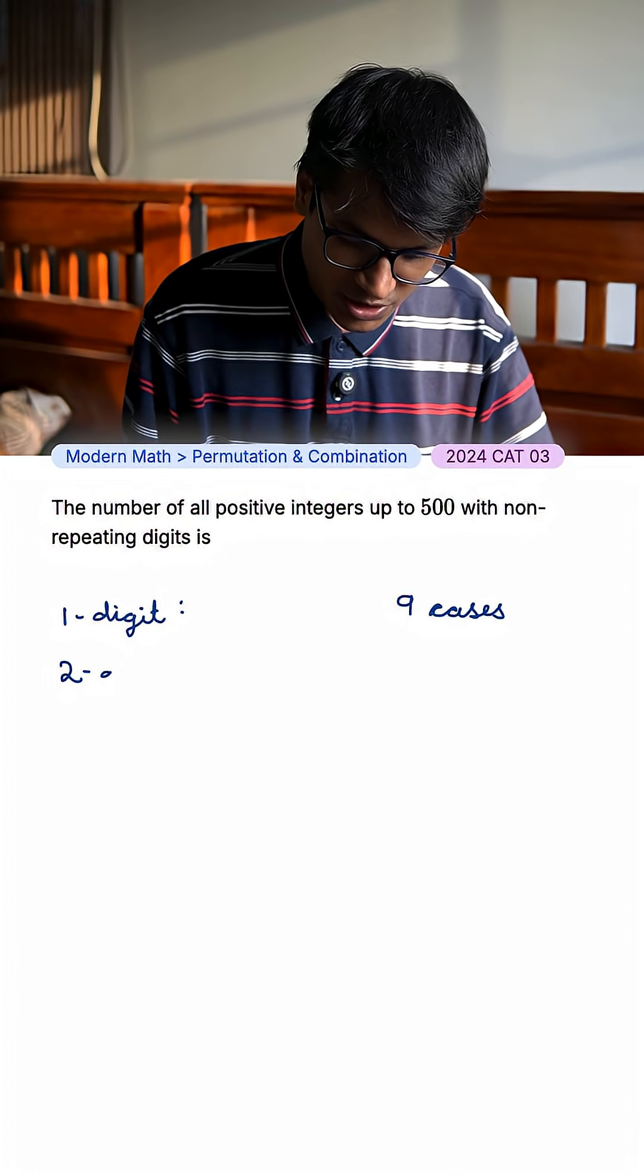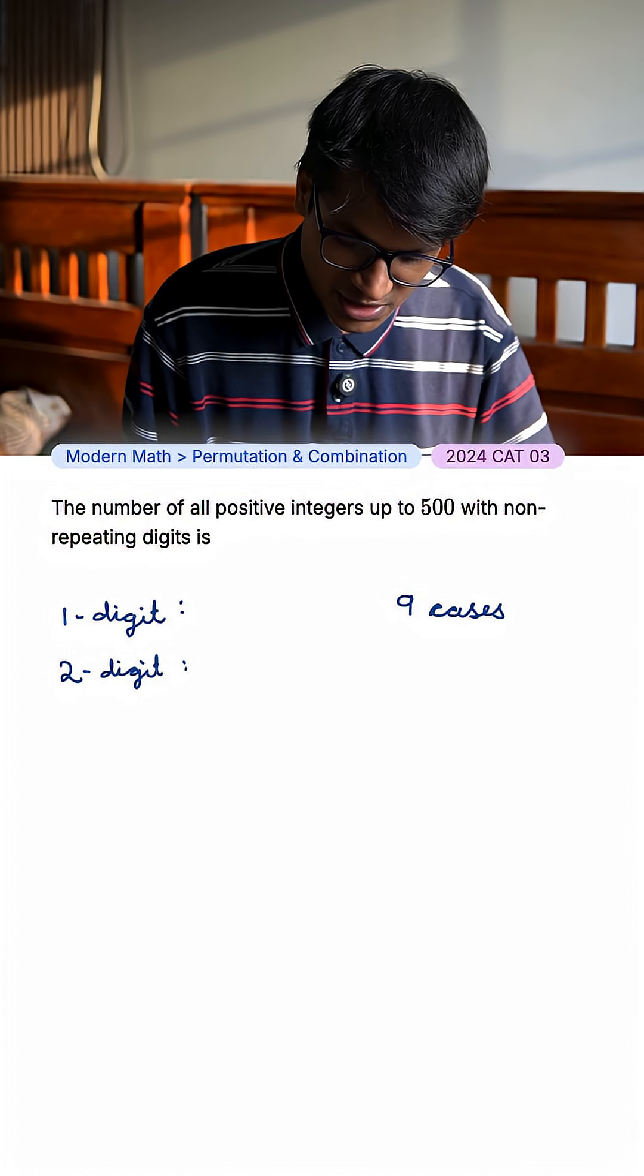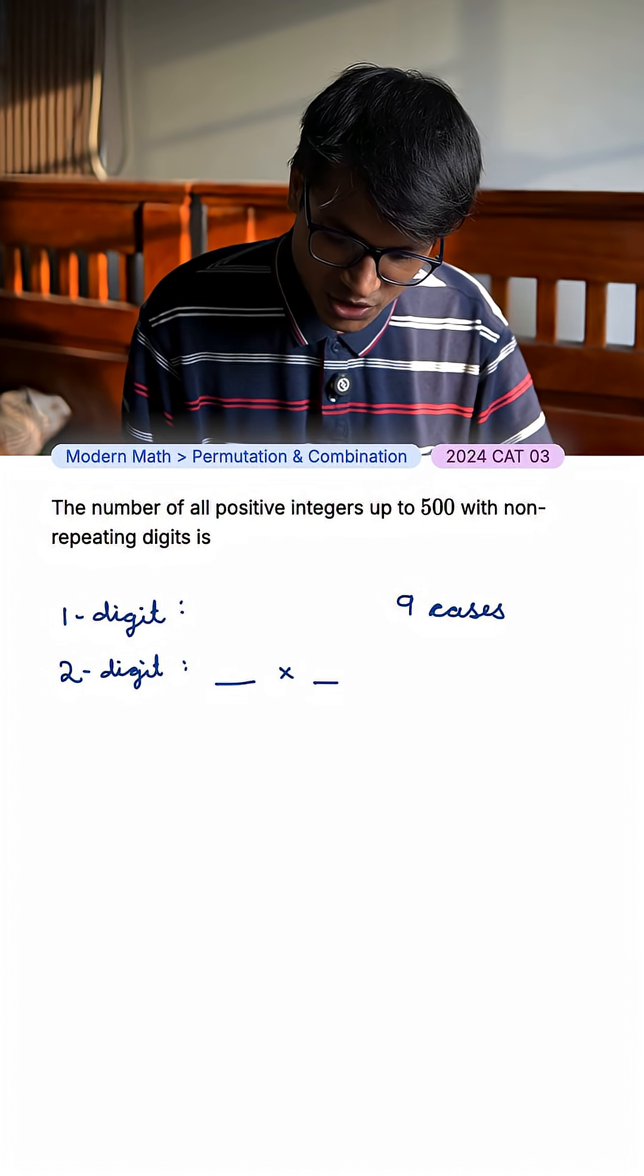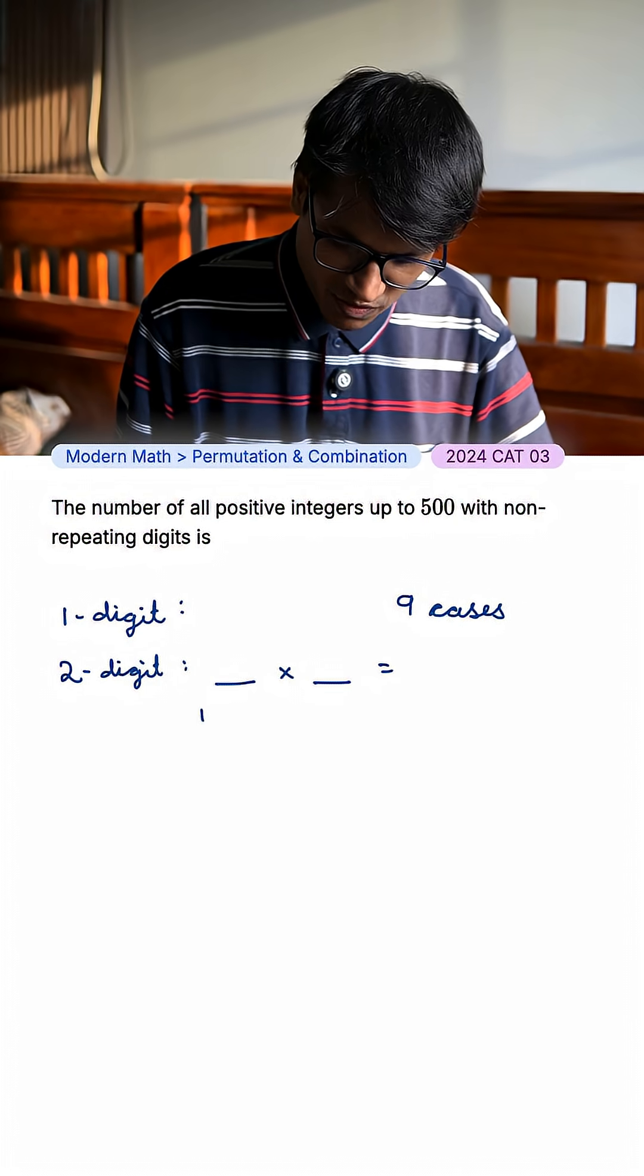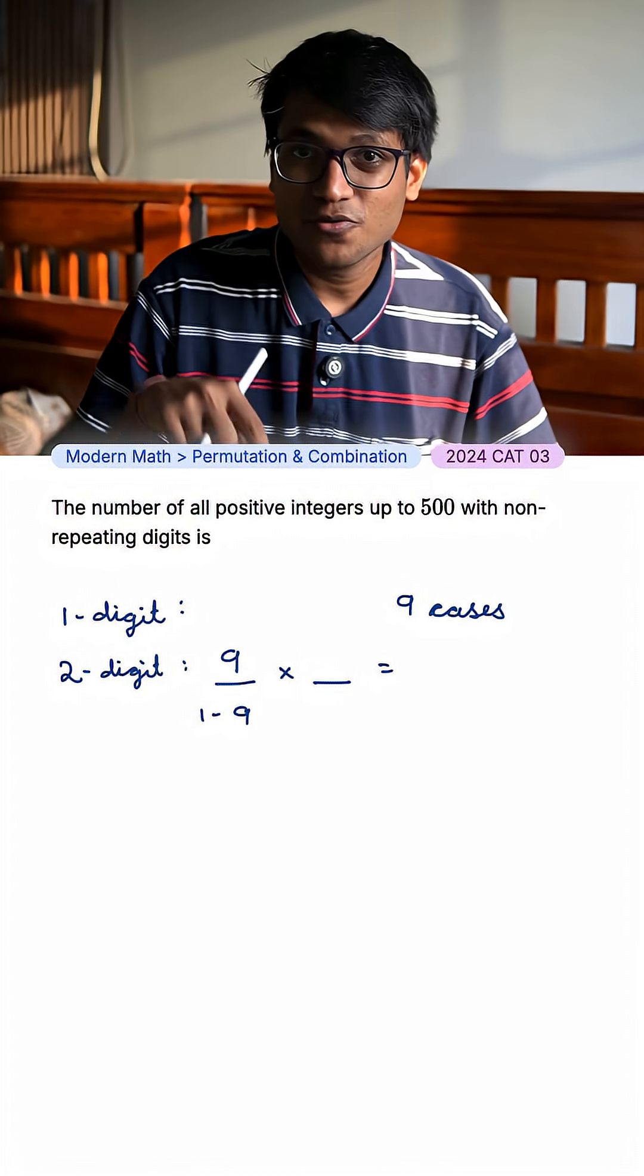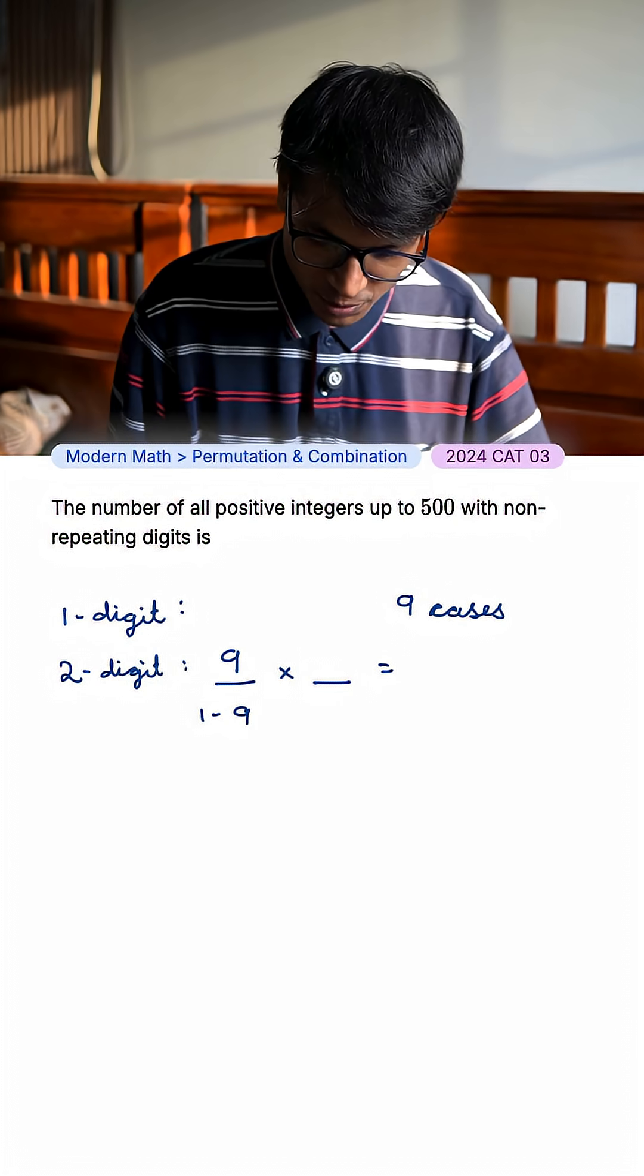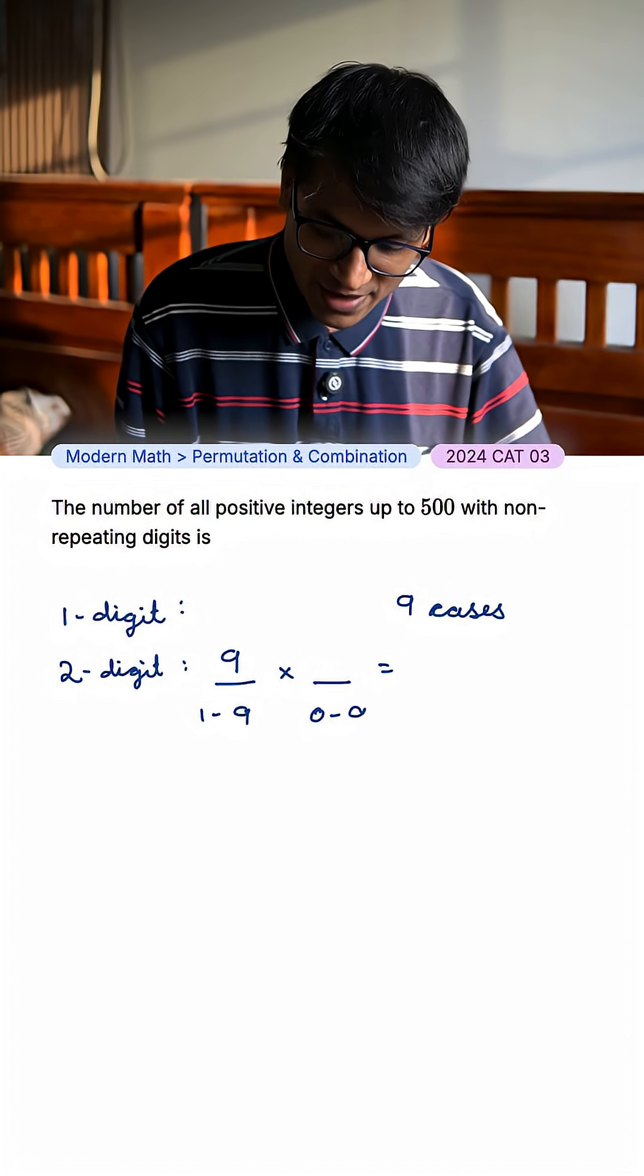Now let's look at 2 digit numbers. I have a tens place and a units place. In the tens place, I cannot put a 0. It needs to be 1 to 9. But in the case of the unit digit, I can definitely put a 0. 0 to 9. So I have 10 cases,